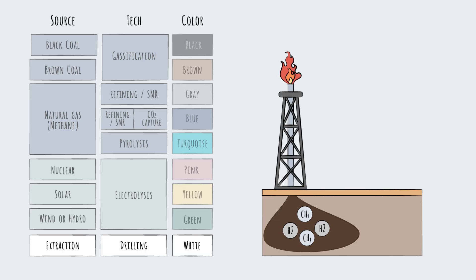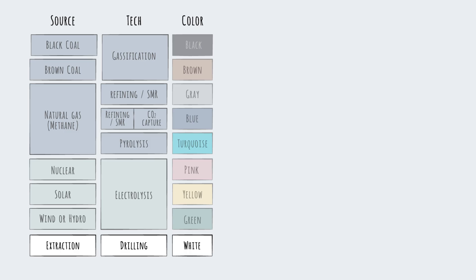In many cases, hydrogen gas naturally escapes the Earth during the extraction of other fossil fuels, and some believe this could be captured and used as white hydrogen fuel. While the nuances of hydrogen production are indeed colorful, it can be helpful to think in more simple terms: gray versus green.